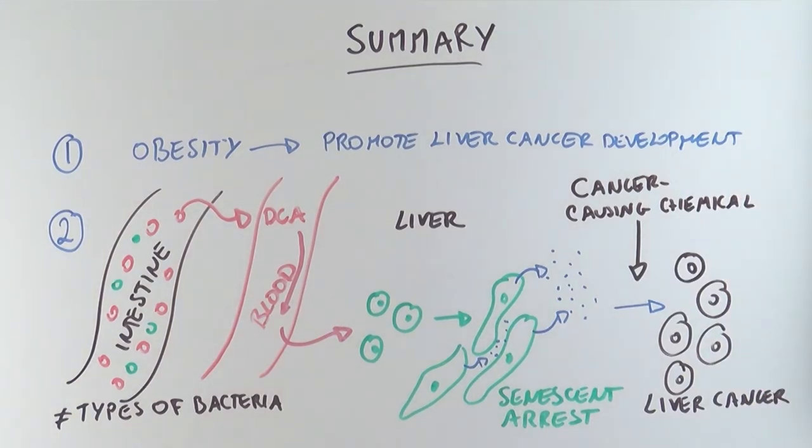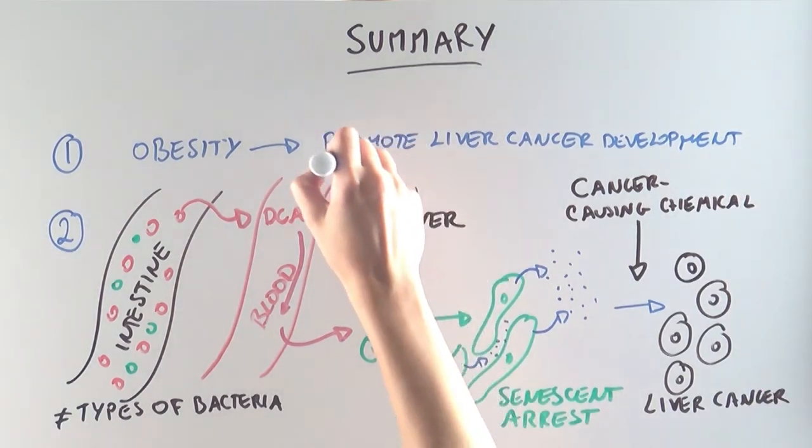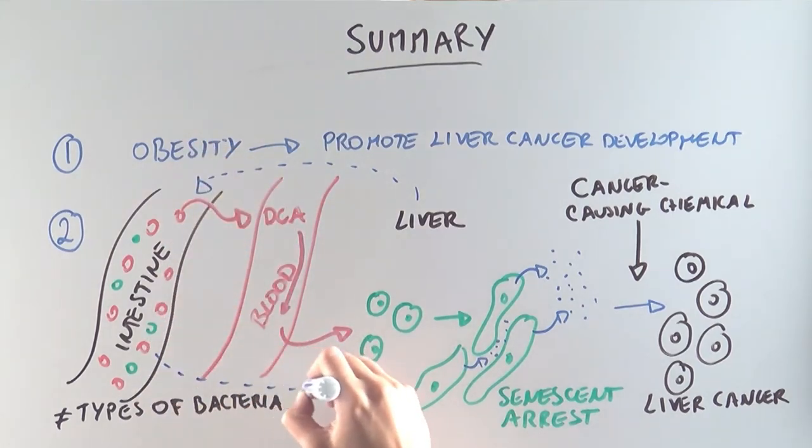So the scientists have come full circle, starting from their interesting discovery in the liver that took them all the way to the intestine and back, to provide a theory that explains how obesity can promote liver cancer.